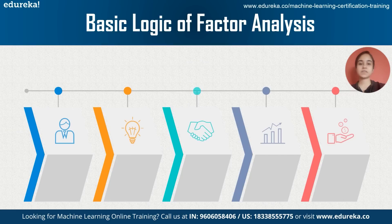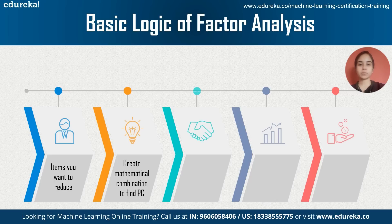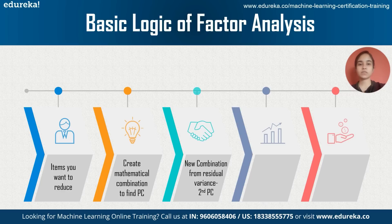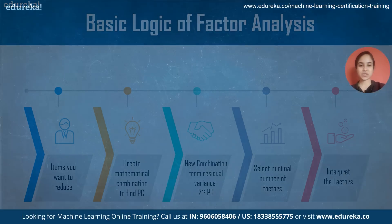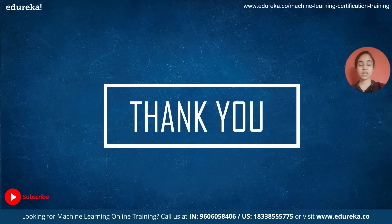The basic logic of factor analysis is: first, find the mathematical combination of variables that maximizes the variance predictable across all variables — this is your first principal component or factor. Then create a new combination from the residual variance that maximizes the remaining variance — this is the second component. Continue until all variance is accounted for, then select the minimal number of factors, and interpret them using the rotated matrix and loadings. Thank you for watching — please leave any doubts in the comment section. Happy learning!